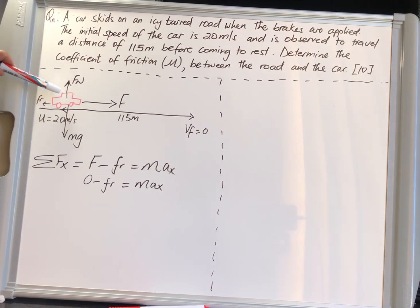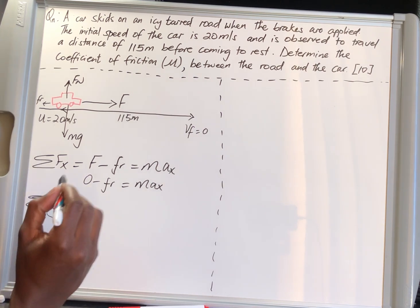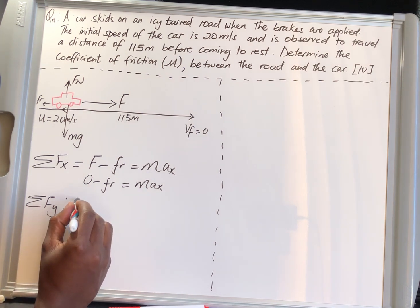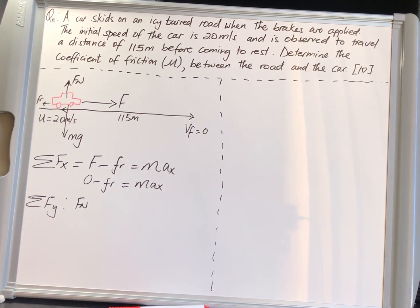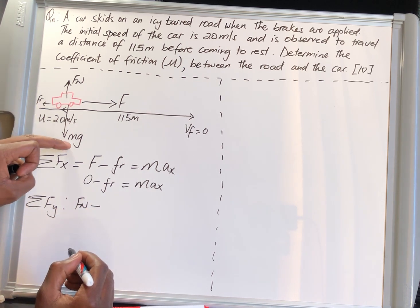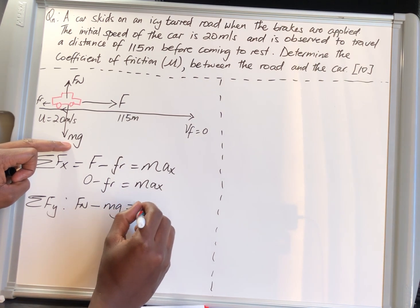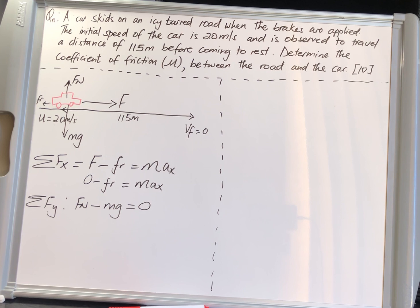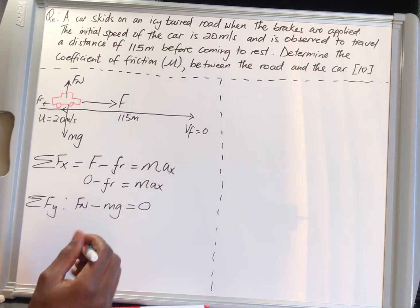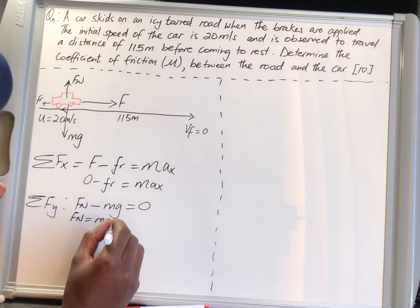Now for the summation of all forces in y: the normal force Fn minus the weight mg equals zero in the y-direction, because the car is not moving up or down — it's fixed as far as the y-axis is concerned. From this we get that the normal force equals the weight: Fn = mg.